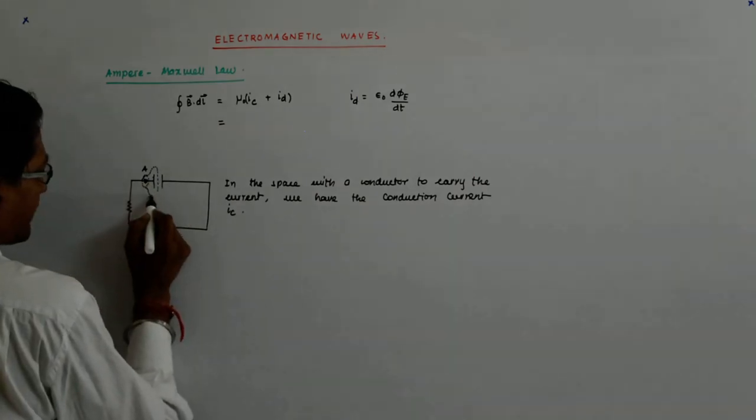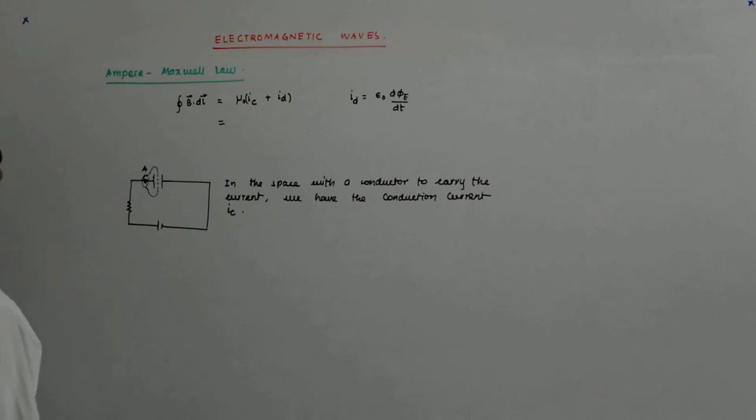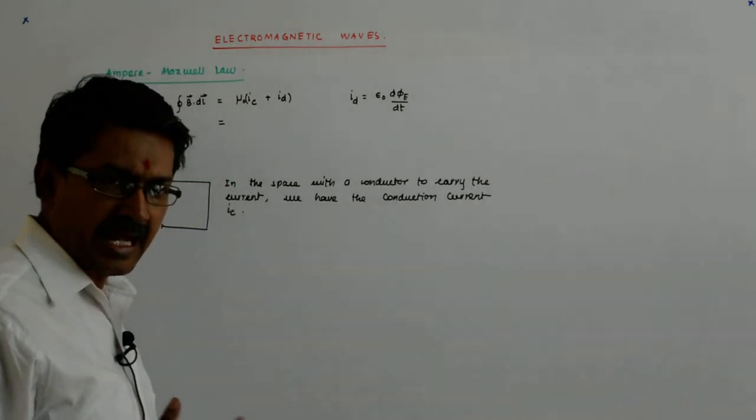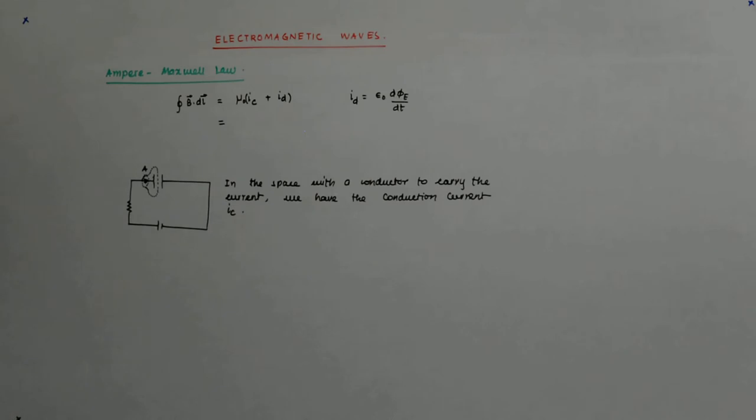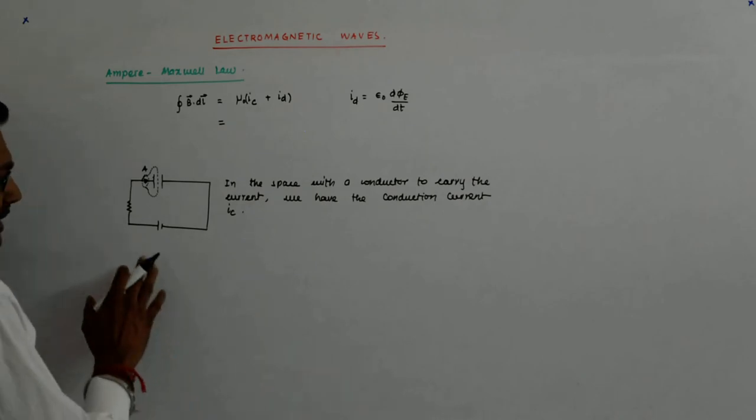You draw a surface, not necessarily symmetrical, but you draw a surface and whatever current pierces that, that will also be, that can also be construed as current, that can also be considered as current.